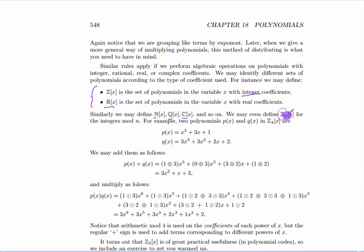You can even define Zn[x], where Zn is the integers mod n. So if we wanted two polynomials in Z4, we would write them this way. Notice that all the coefficients are from the set 0, 1, 2, 3. But this time when we do arithmetic on the coefficients, we'll use the arithmetic of Z4, which we've denoted as circle plus and circle times.